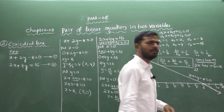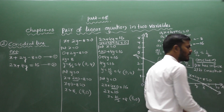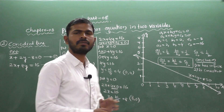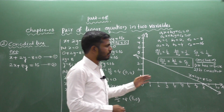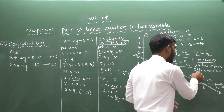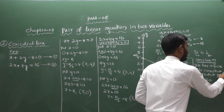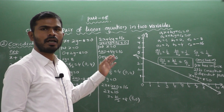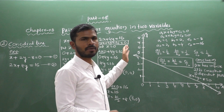Since there is at least one common solution — in fact infinitely many — this type of pair of linear equations is called a consistent pair of linear equations, and more specifically a dependent pair of linear equations in two variables.